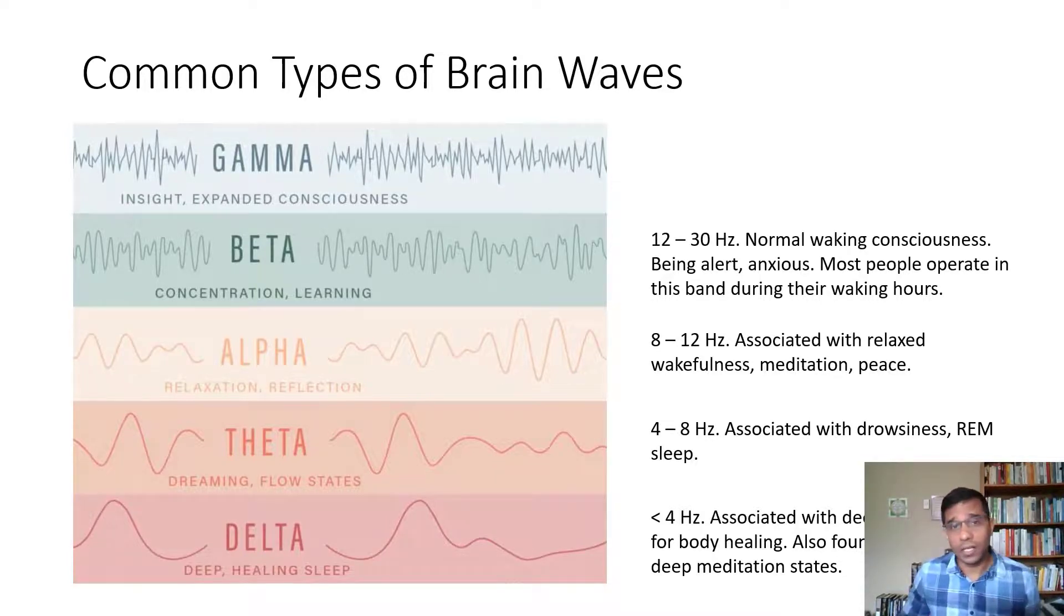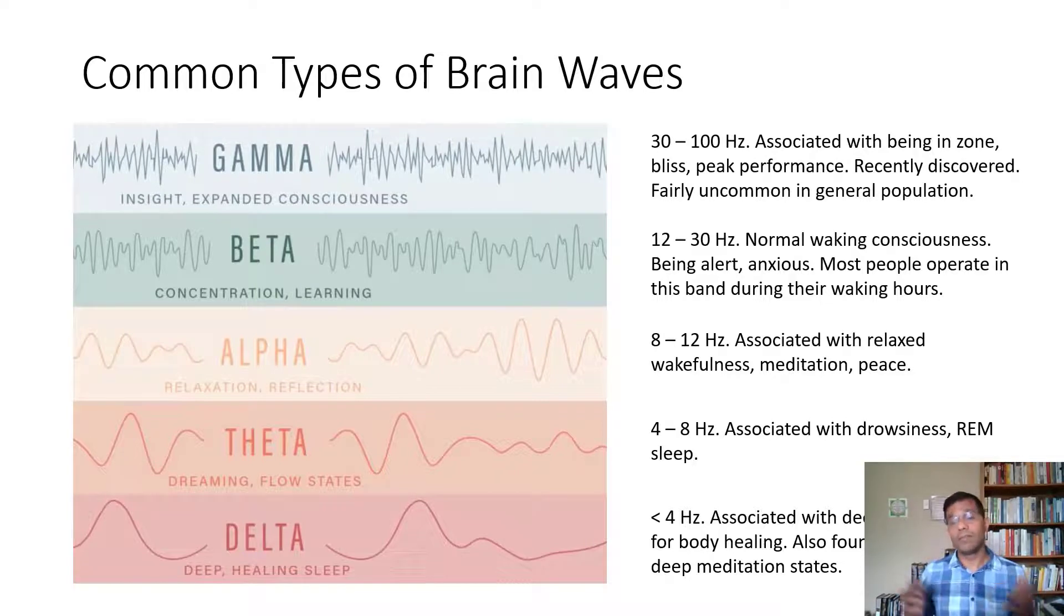The last one I want to talk about is the gamma brain wave patterns. This is something that can go from 30 hertz to 100 hertz. That's a huge range here. This is the most recent of the brain waves that have been discovered. The traditional EEGs were not able to capture these wave patterns. It's like too high frequency, especially the higher ends of gamma waves, was really difficult for the previous machines to capture. But now with the advances, these wave patterns have been observed.